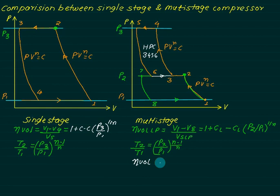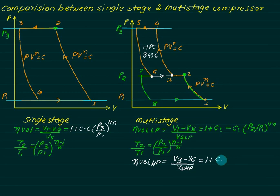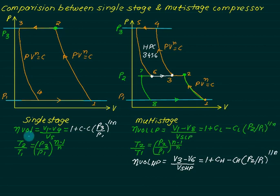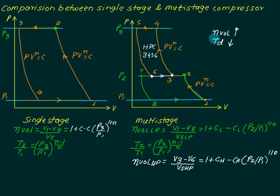For the HP cylinder, η_vol = (V3 − V6) / V_s(HP) = 1 + C_H − C_H × (P2/P1)^(1/n). Since P2/P1 is a smaller quantity compared to P3/P1, the volumetric efficiency of each stage in multi-stage compression is greater than that of single stage. So the first advantage is increased volumetric efficiency, and the second is decreased delivery temperature — both favoring multi-stage over single-stage when pressure ratio is very high.